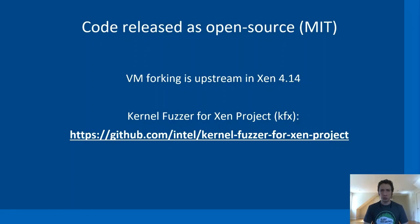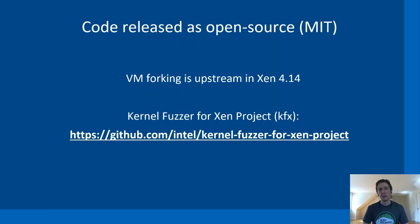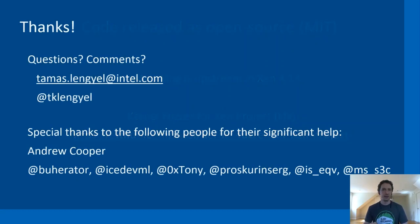All of this code is released as open source under the MIT license. The VM forking feature is already upstream in Xen, released this summer, and the Kernel Fuzzer for Xen project — KFX — is available on Intel's GitHub at github.com/intel/kernel-fuzzer-for-xen-project. I hope you will check it out and find it useful for security validation in the future. Thank you for attending, please reach out with any questions or comments, and special thanks to those who helped significantly with this project.